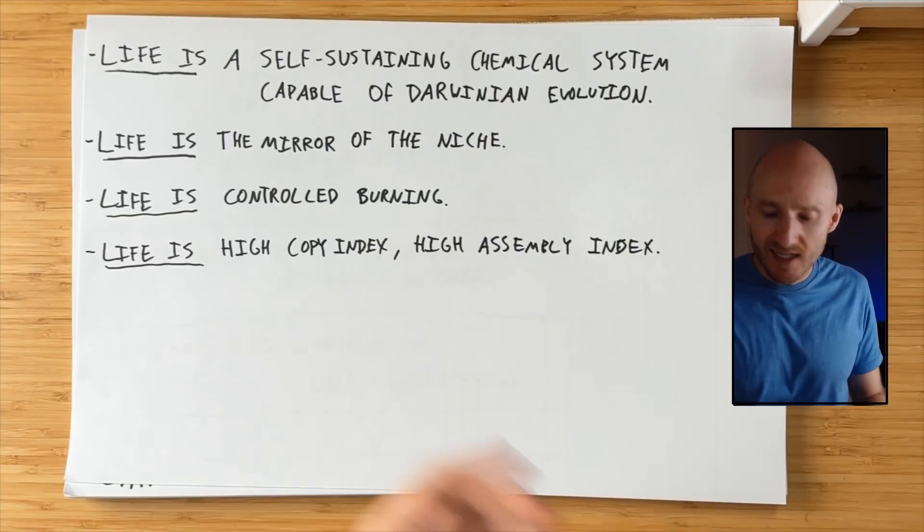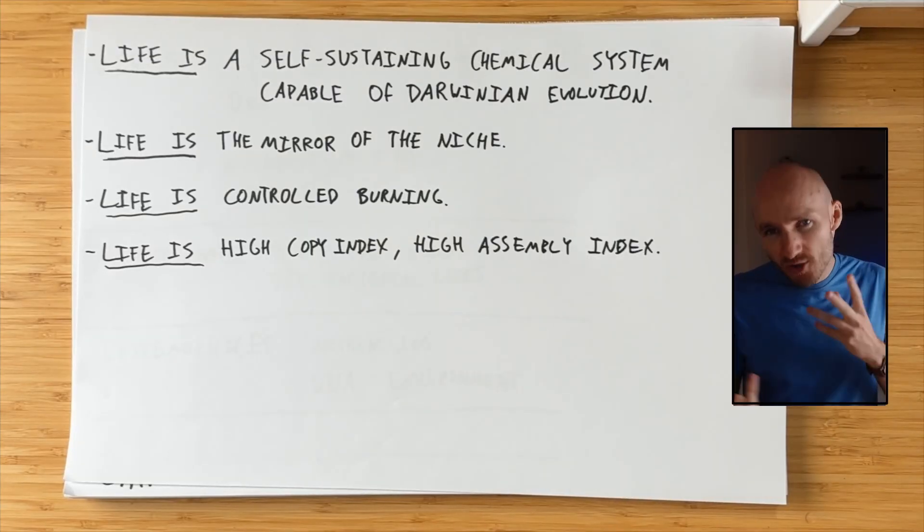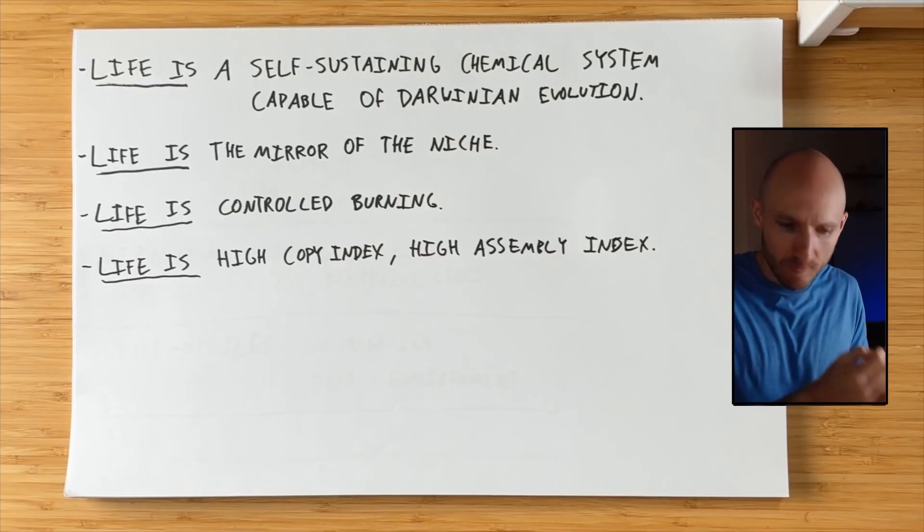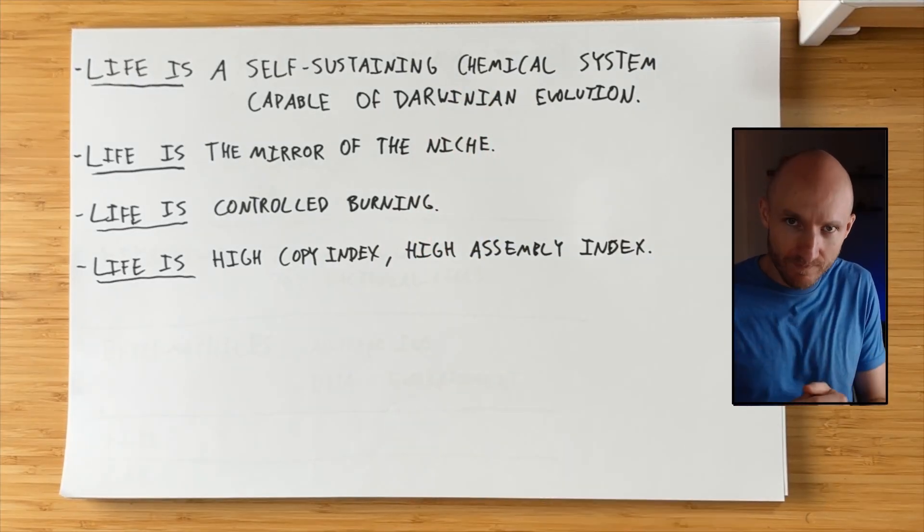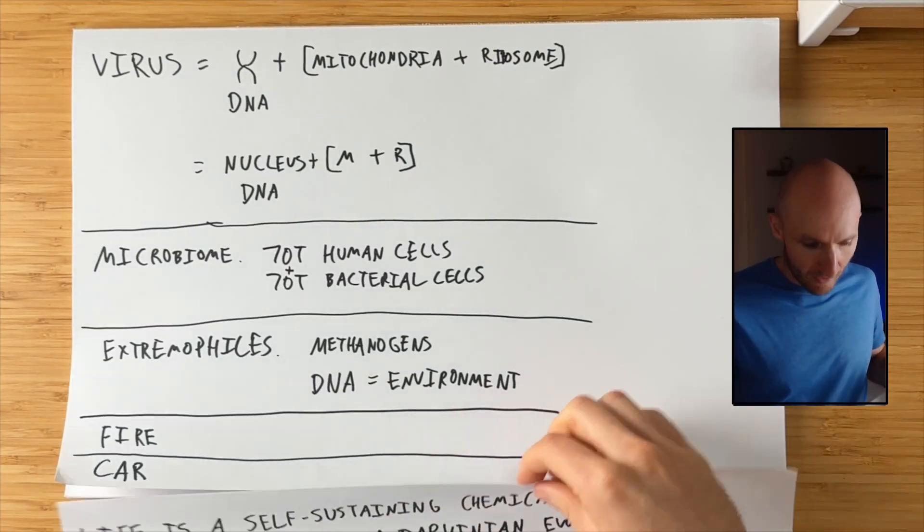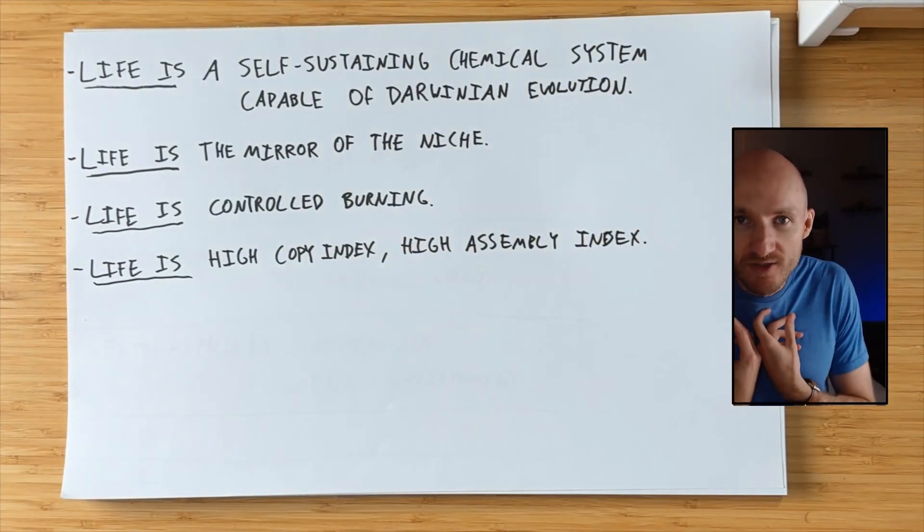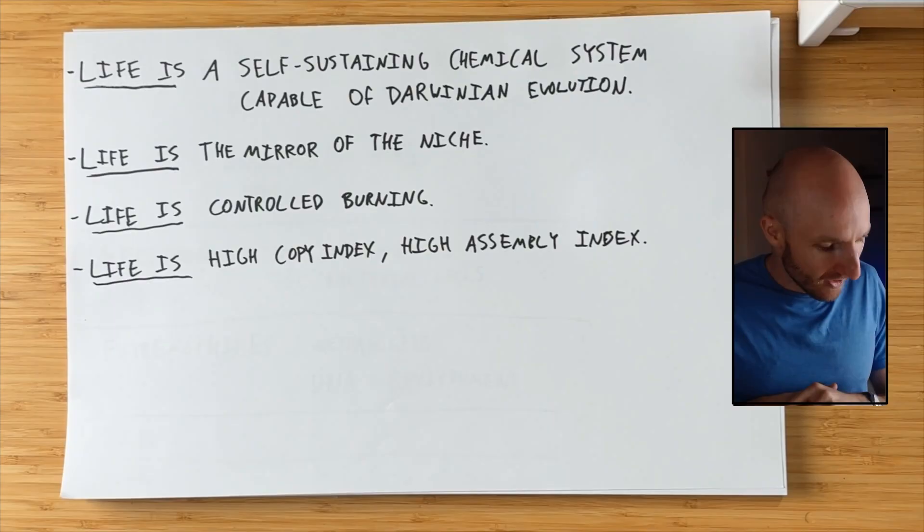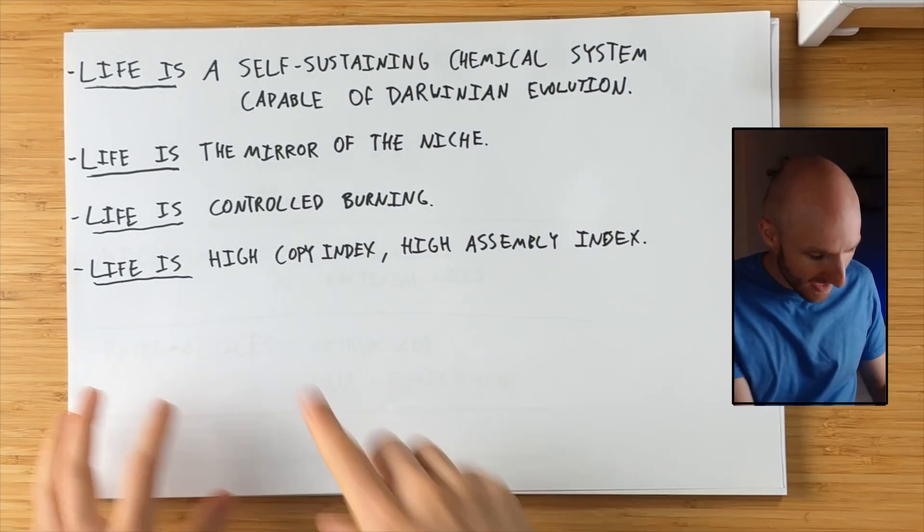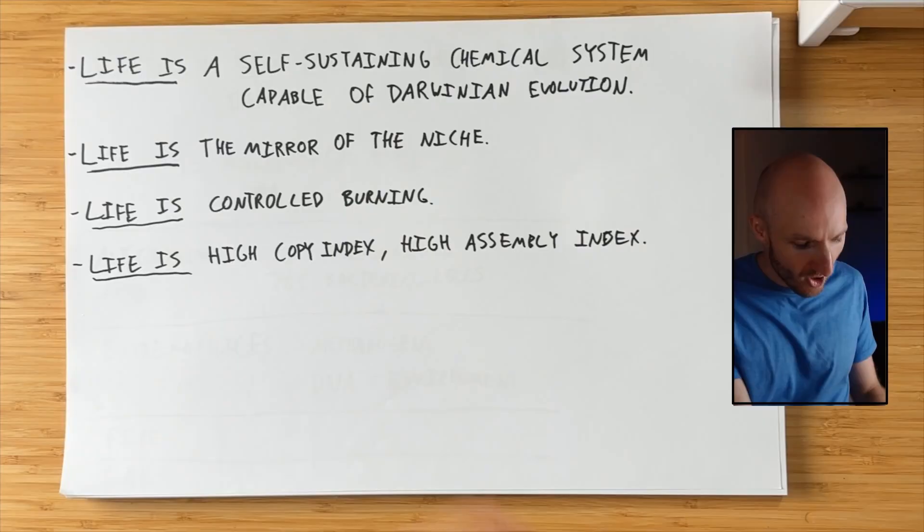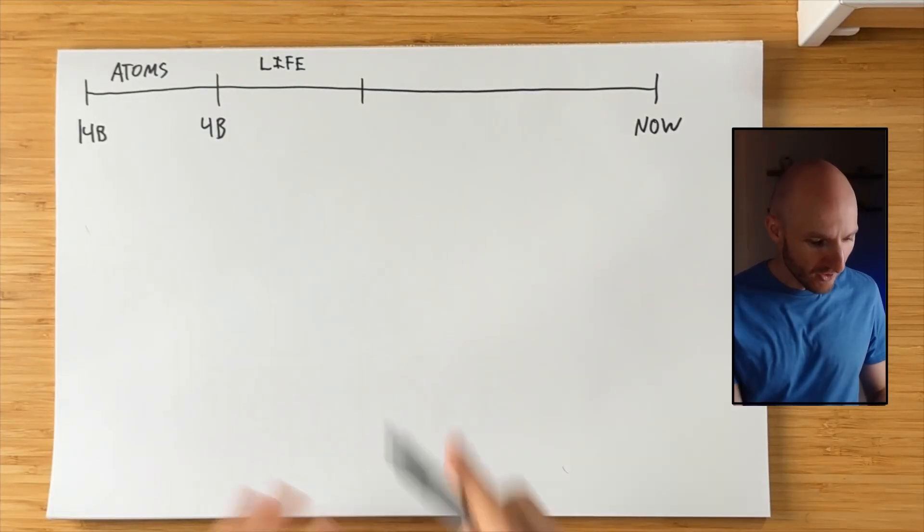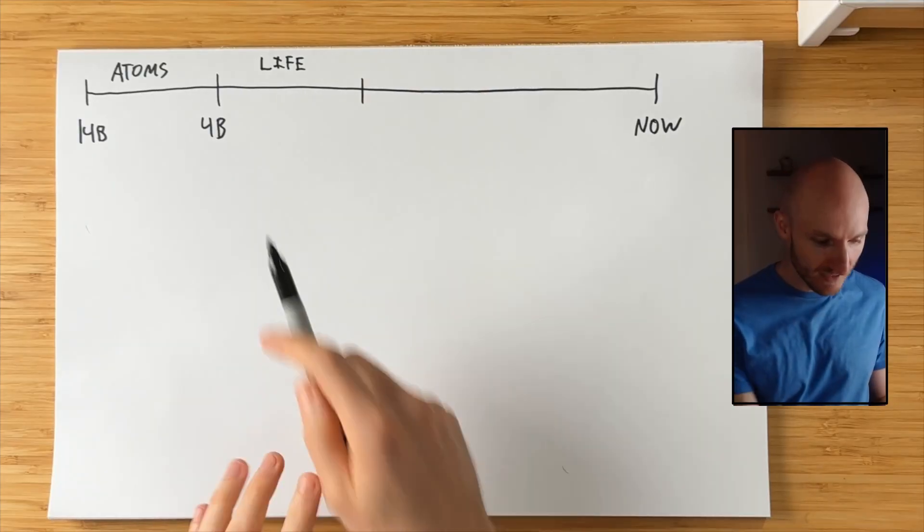And so the life is just another way to talk about the niche. And then we also looked at how life is controlled burning. For something like a fire, it is a self-sustaining chemical system, arguable whether it has Darwinian evolution, and life takes those same fire processes of a self-sustaining chemical system and then does it in a more controlled way. And then finally, we looked at something like a car and how a car is produced as humans do by externalizing our solutions in the environment instead of life, which internalizes the solutions, and that life and technology are things with a high copy index and a high assembly index. So I hope today gives you a good idea for what life really is.